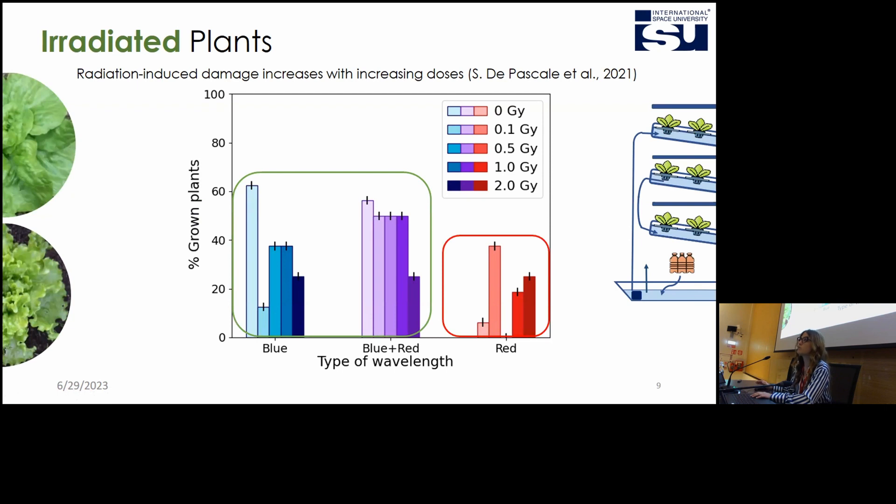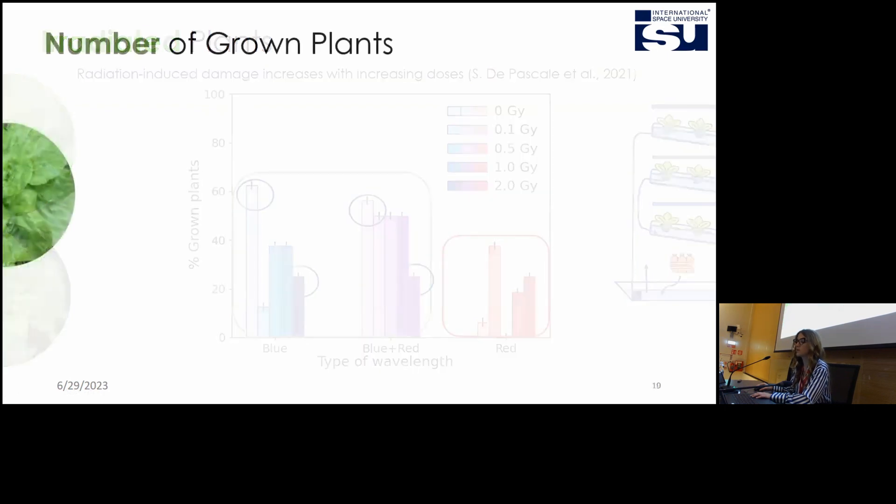This is, however, probably due to a lower amount of water that was in the red case, but if we go back to the blue and blue-red case, we see that we have a higher percentage of grown plants for lower radiation doses with respect to higher radiation doses. This means that probably the radiation induced damages increases with the increased dose of radiation.